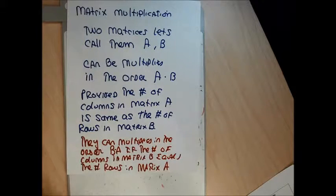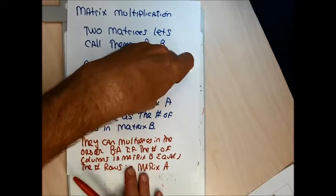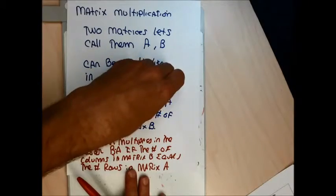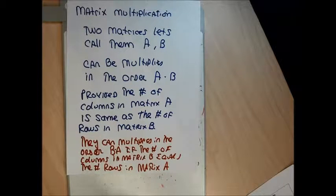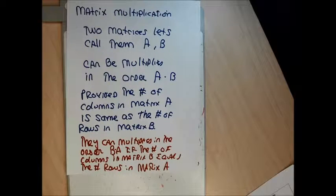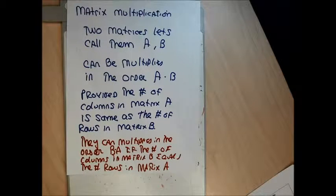The bizarre thing about matrix multiplication is that sometimes you can multiply A times B in that order, but B times A won't be possible. And even if A times B and B times A are both possible, they're not always going to give the same result. Matrix multiplication is bizarrely defined. When we get to the test, if you rely on your calculator to do it, I'm completely content with that.